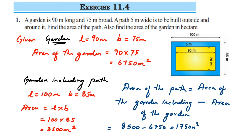The second part asks us to find the area of the garden in hectares — instead of meter square, we have to find it in a different unit, hectares.